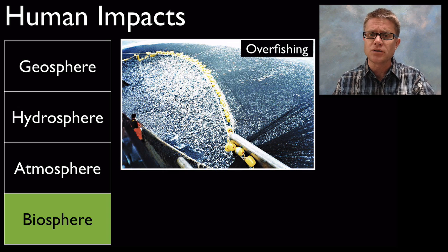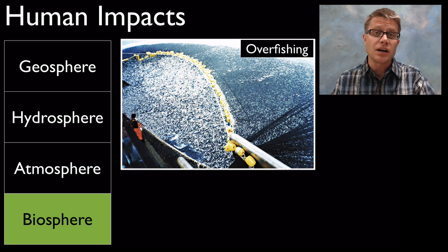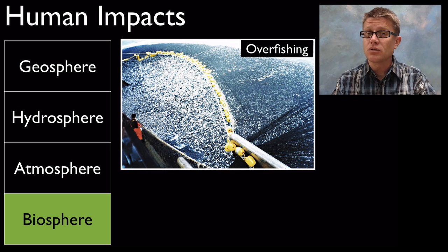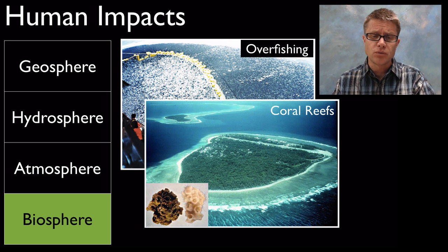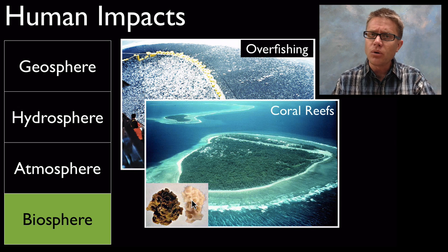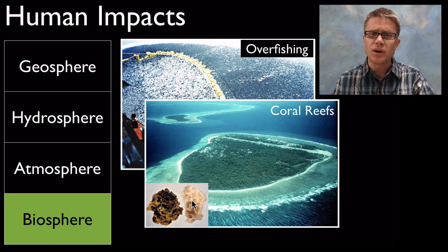We're also changing the biosphere — the life on our planet. As we deforest the rain forest that life is not going to come back. As we overfish an area the fish aren't going to come back, and so now we've created a non-renewable resource. When we change our environment we're changing areas like coral reefs — as we increase the temperature they bleach, and the whole food chain built upon them falls down as well. And once a species goes extinct it doesn't come back.